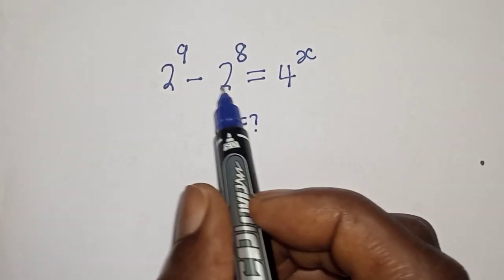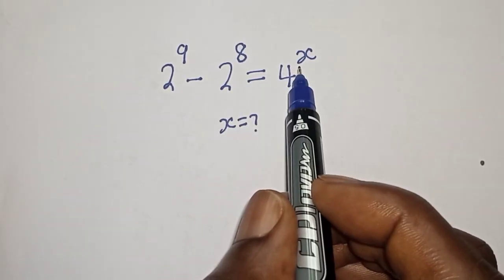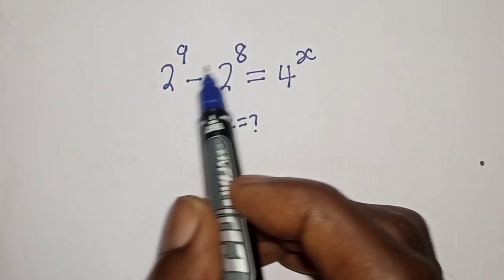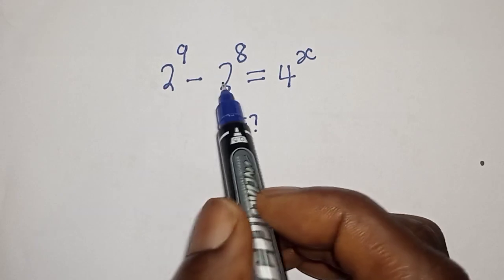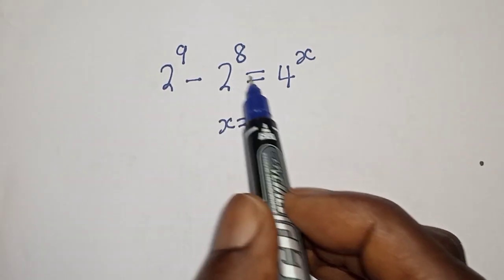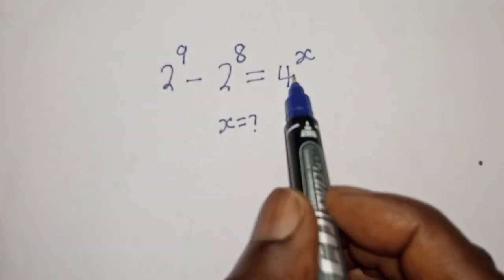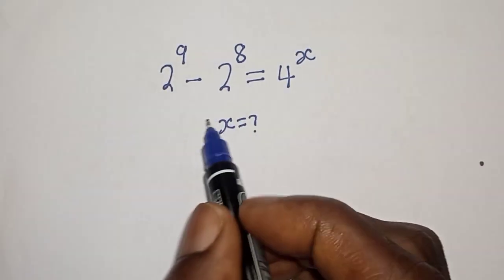Hello, welcome to Magist. In this class, I want to find the value of s from this equation: 2 raised to power 9 minus 2 raised to power 8 is equal to 4 raised to power x.